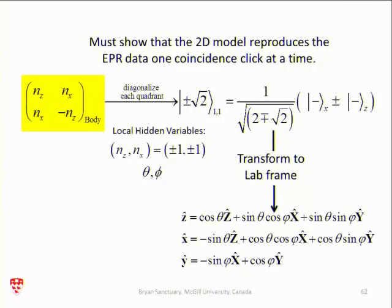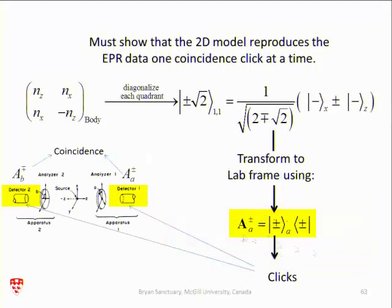You take your two-dimensional spin, I diagonalize it so I've got my rotational states, which are here now, the pure states, plus or minus one. I take those states and I transform with a rotation to the laboratory frame. That's what we do with the diatomic molecule. I then define an operator that corresponds to clicks. Plus, plus is transmission, minus, minus is absorption, A is the direction of the filter angles. And these are the usual quantum states. And they will give us clicks.